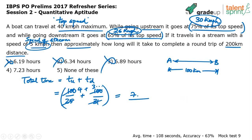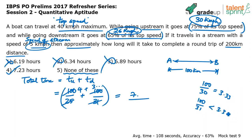The first three options are eliminated — the answer should clearly be more than 7. Now since the fifth option is 'none of these,' you may have to do a precise calculation, or you can take a chance and mark option 4. To verify: 100 divided by 30 is exactly 3.33, and 100 divided by 31 should be less than 3.33 because when the denominator increases the value decreases. So 4 plus something less than 3.33 gives less than 7.33.